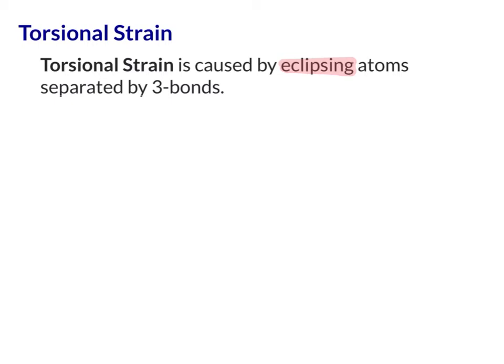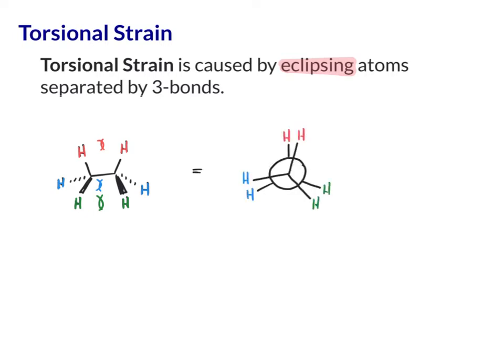If I were to give you the following molecule, even without drawing a Newman projection, you should be able to see that these two hydrogens are in the same plane — they're zero degrees apart, so these two hydrogens are eclipsed. Likewise, the two hydrogens on the wedges are eclipsed, and the two hydrogens on the dashes are eclipsed. Each set of hydrogens being eclipsed brings torsional strain into the molecule.